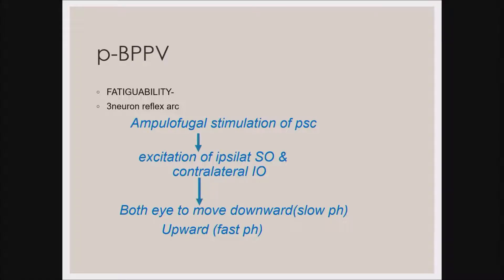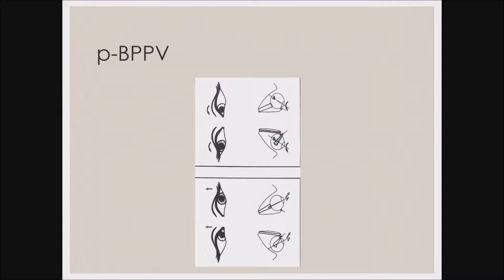BPPV nystagmus and vertigo are fatigable. It occurs via a three-neuron reflex arc: stimulation of the posterior semicircular canal causes excitation of the superior oblique of the same side and contralateral inferior rectus muscles, causing both eyes to move downward in slow phase and upward in fast phase. In right posterior canal BPPV, this produces torsional downbeating or torsional right-beating nystagmus; fixing gaze toward the opposite side produces eye movement toward the forehead due to superior oblique and inferior rectus inclination.